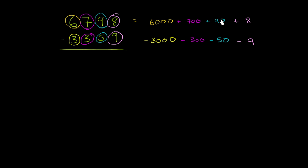we could go one place value up to the 90. And what if we were to take 10 from the 90? So let's do that. If we were to take 10 from the 90, the 90 becomes 80.